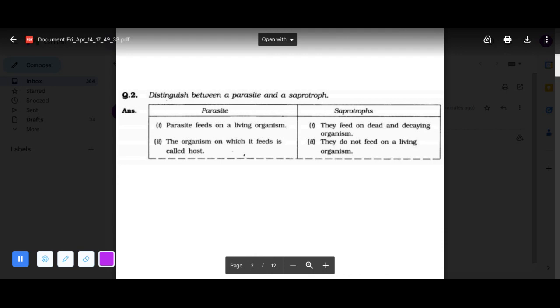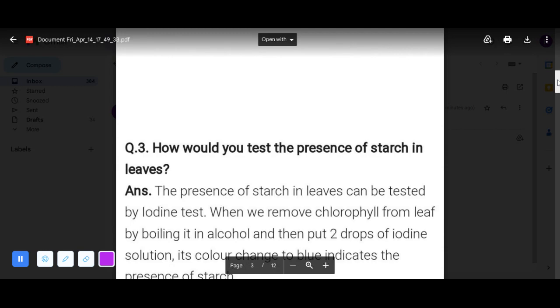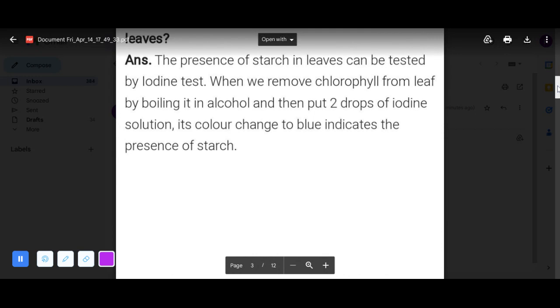Now next question, question number three: how would you test the presence of starch in leaves? The presence of starch in leaves can be tested by iodine test. When you remove chlorophyll from leaf by boiling it in alcohol and then put two drops of iodine solution, its color changes to blue black. That indicates the presence of starch.